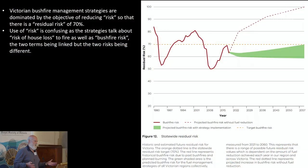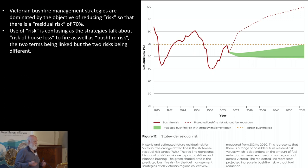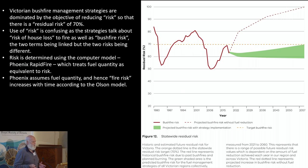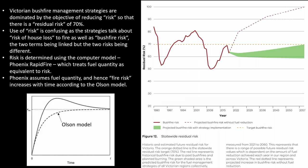The use of the word 'risk' is a bit confusing anyway, because the management plans talk about house loss risk as well as bushfire risk. The two seem to be interrelated, but they're quite different things in practice. Risk is also determined using a computer model called Phoenix Rapid Fire, which basically treats fuel quantity as synonymous or equivalent to risk. Phoenix assumes that fuel increases according to what's called the Olsen model — it starts low after a fire and just increases perpetually with time until it flattens out at some high point, a long unburnt state.